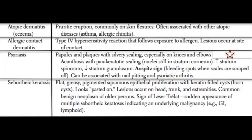To review psoriasis histology: acanthosis with parakeratotic scaling, nuclei still present in the stratum corneum, increased stratum spinosum layer cells, and decreased stratum granulosum layer cells. Psoriasis is also sometimes associated with arthritis, as well as nail pitting — little indentations visible in the nail beds of these patients.